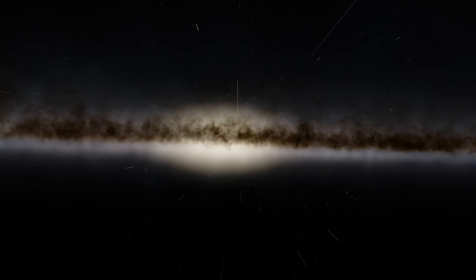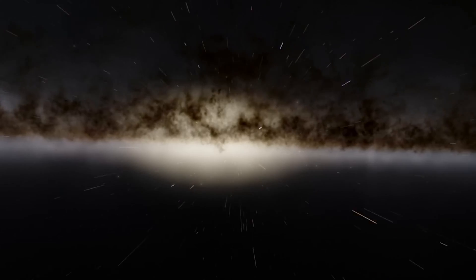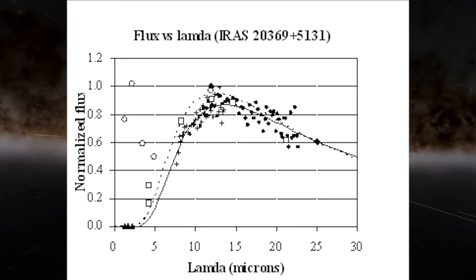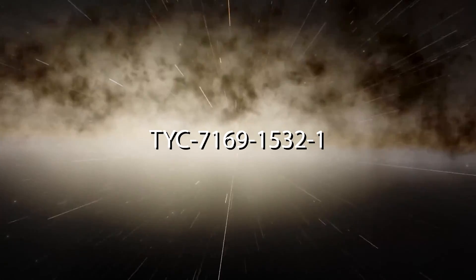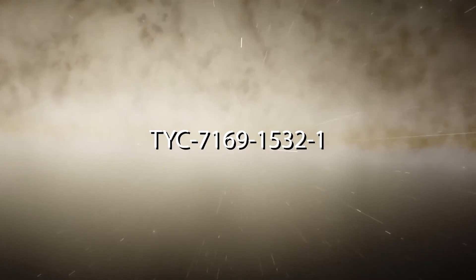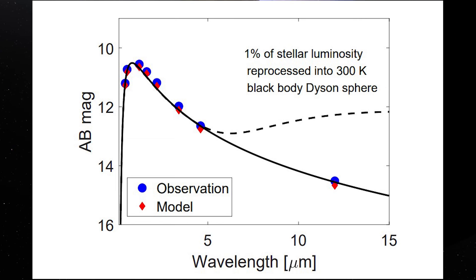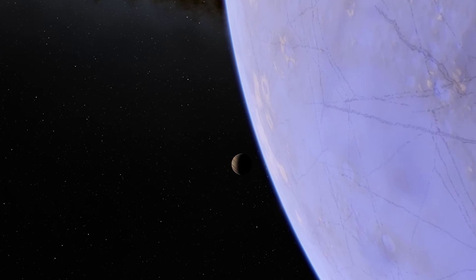Interestingly enough, a search for Dyson spheres was conducted as part of SETI, where a database of 250,000 stars mapped by the AIRA satellite were searched for objects that would emit a specific infrared spectrum as a Dyson sphere would. Only a few interesting objects were found which could qualify as Dyson spheres. Among these, the most promising are TYC 7169-1532-1 and TYC 6111-1162-1. However, it is very probable that these are just stars with a weird infrared emission curve - follow-up observations are still required to say anything conclusive. New data from the Gaia satellite that mapped 1.7 billion stars in the galaxy might lead to some new interesting discoveries.